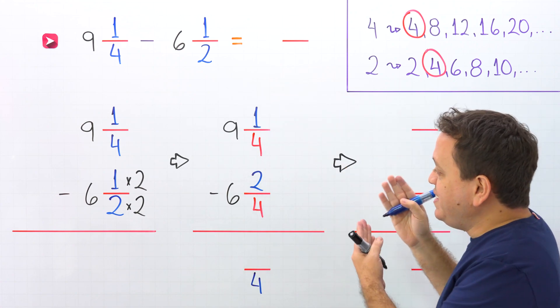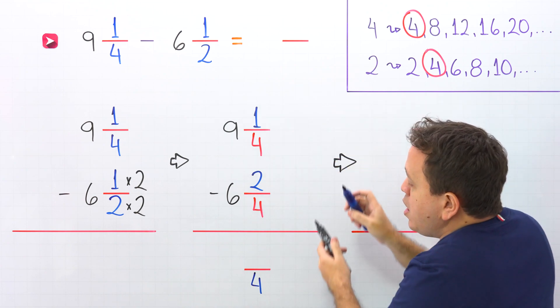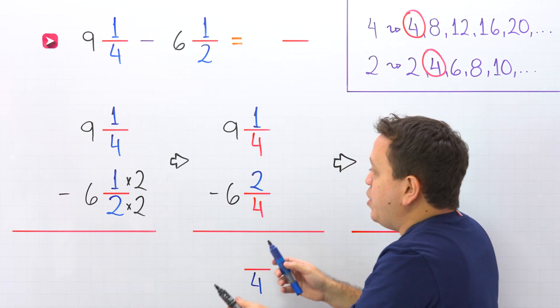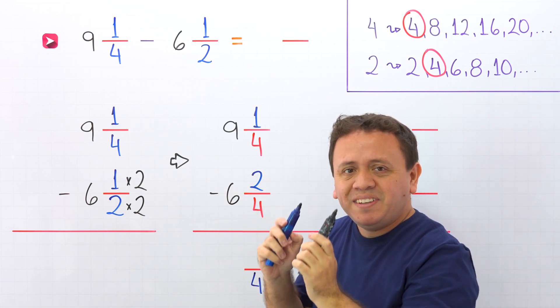The problem in this case is that the second fraction, 2 fourths, is bigger than the first one, 1 fourth. We can see that problem over here. Don't forget that 2 fourths and 1 half are equivalent fractions. They represent the same value.